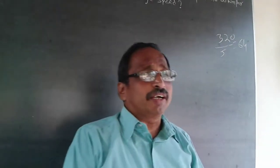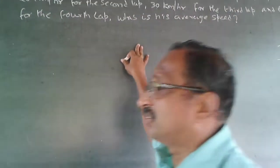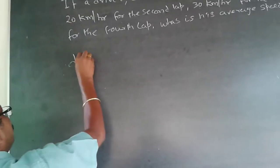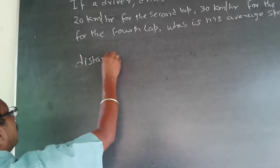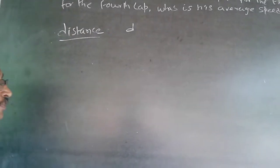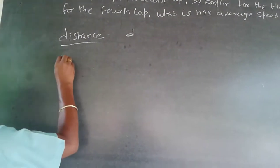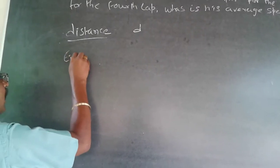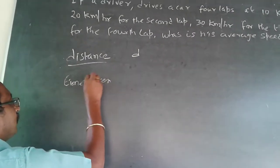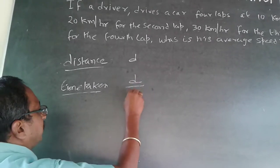In our problem, the lap distance is not given, so I will call each lap distance D. D is the distance for each lap. The time taken for each lap is distance divided by speed — so time = D/speed.